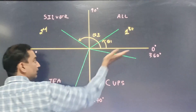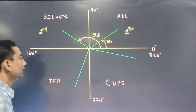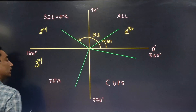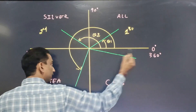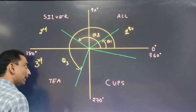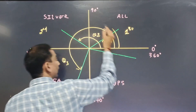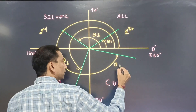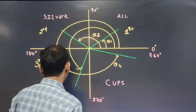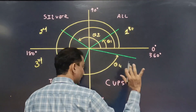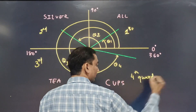In the first quadrant, angles range from 0 to 90 degrees. In the second quadrant, the obtuse angles range from 90 to 180 degrees. In the third quadrant, theta 3 is measured anti-clockwise and is more than 180 but less than 270 degrees. In the fourth quadrant, theta 4 ranges from 270 to 360 degrees, measured from the positive x-axis.